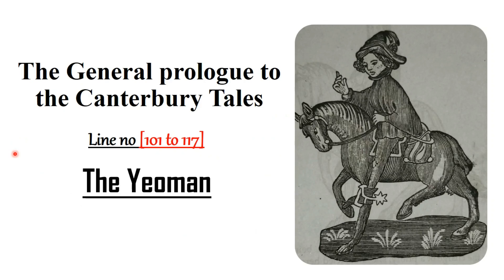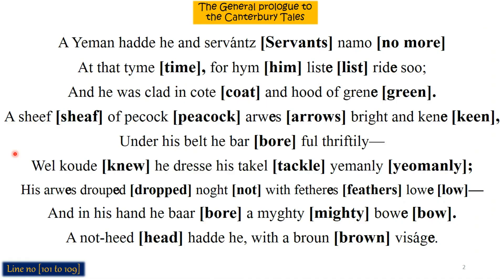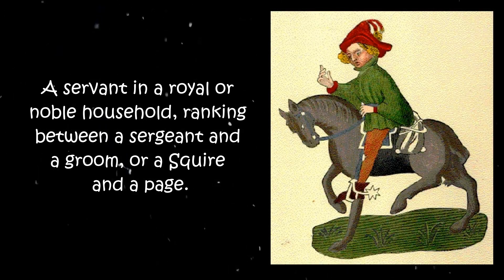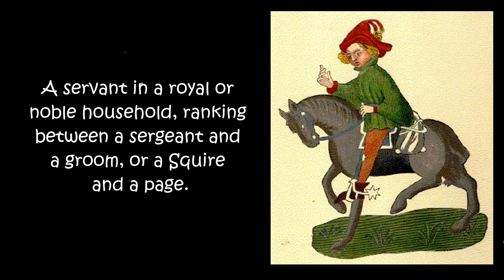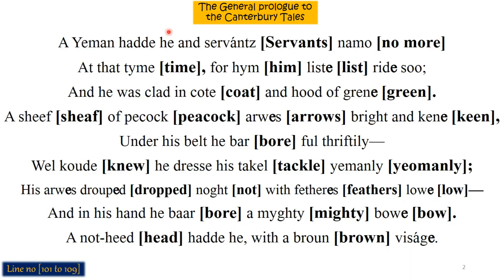The Squire and Yeoman were not coming from the war. Now let's start the text: 'A Yeoman had he' — here 'he' is a reference to the Knight. That Knight had a Yeoman. Basically, a Yeoman is a servant in a royal or noble household, ranking between a sergeant and a groom, or between a squire and a page. That's why Chaucer says here 'a Yeoman had he.'